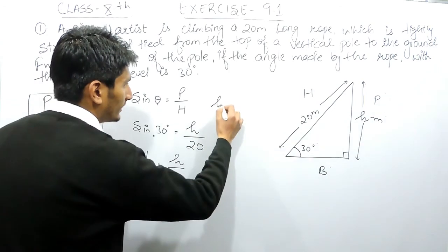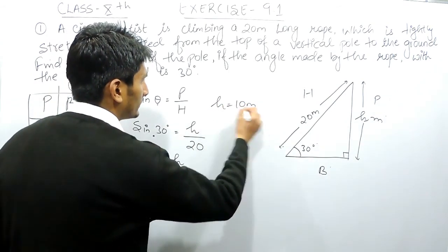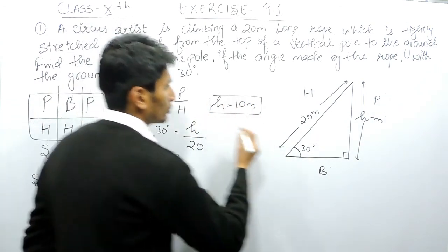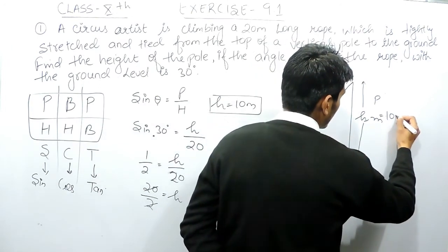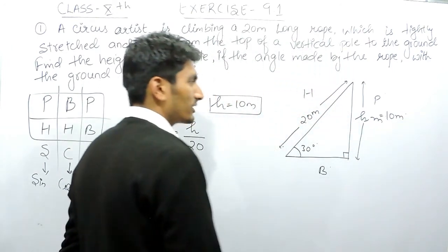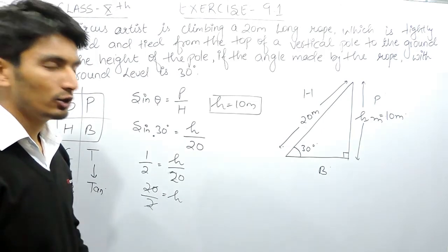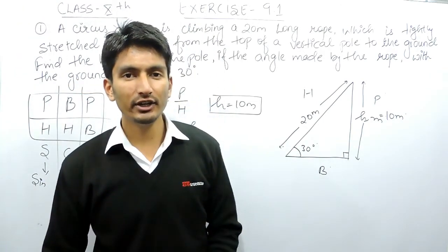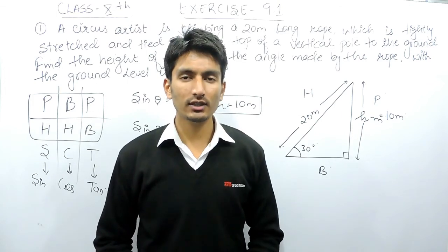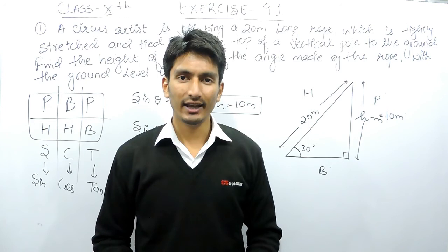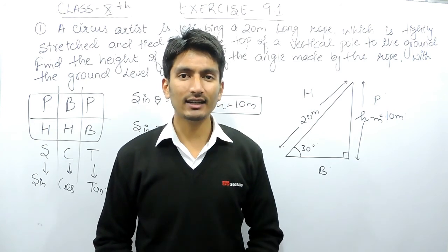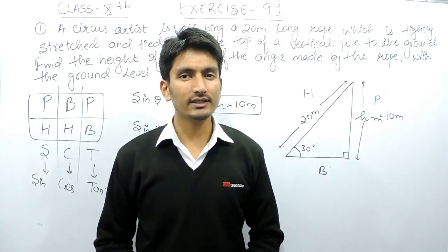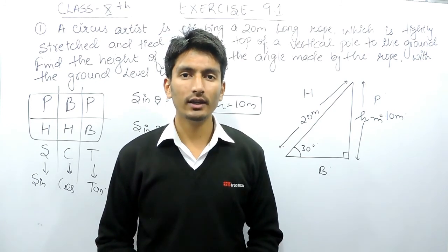Cross-multiplying, h = 20/2, so h equals 10 meters. The height of this pole is 10 meters. This is how you solve these kinds of questions. In the next video we'll solve the rest of the questions. If you like this video, please subscribe to our channel. For any problem in math, you can contact us — the phone number, email address, and WhatsApp number are given below in the description.